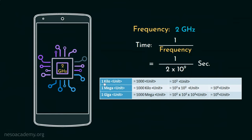We know 1 Kilo unit equals to 1000 units. Hence, 10 cube units. Therefore, 1 Mega unit is 1000 Kilo units and thus 10 to the power 6 units. And finally, 1 Giga unit is 1000 Mega units and thus 10 to the power 9 units.